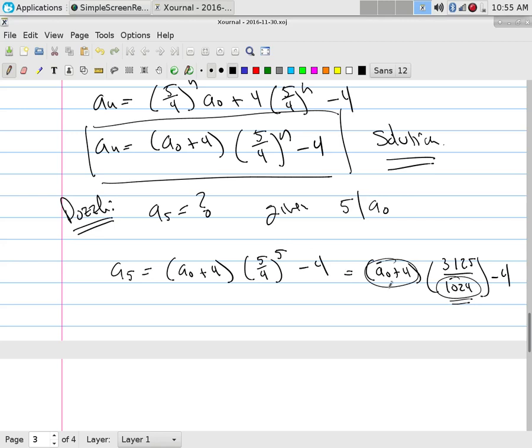What's the smallest multiple of 1024 you can think of? 1024. So here's what I'm going to do: if those two divided to one, I'm just going to let a_0 plus 4 equal 1024.